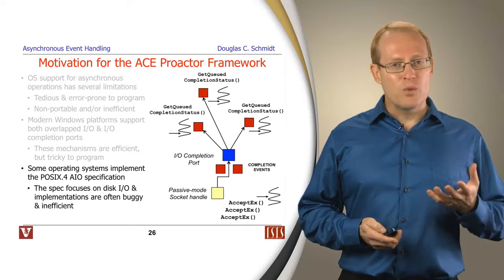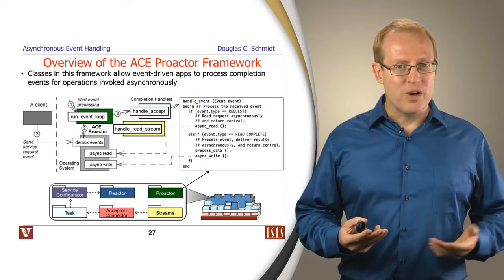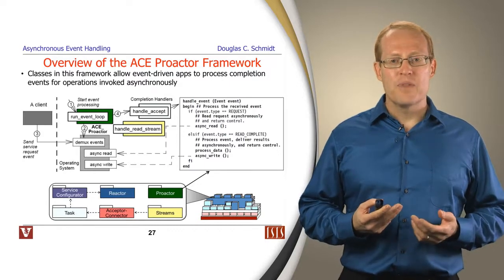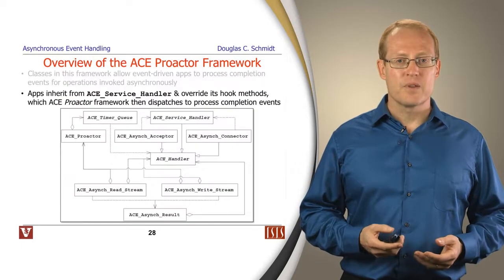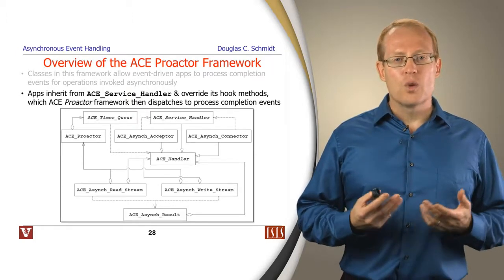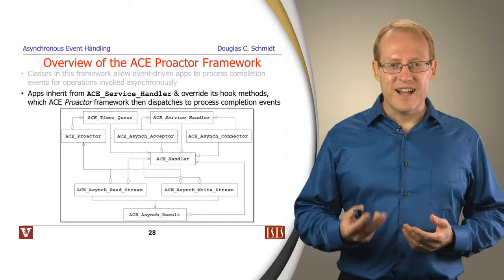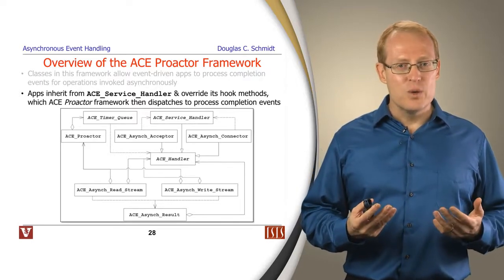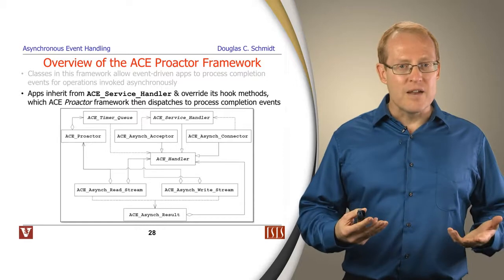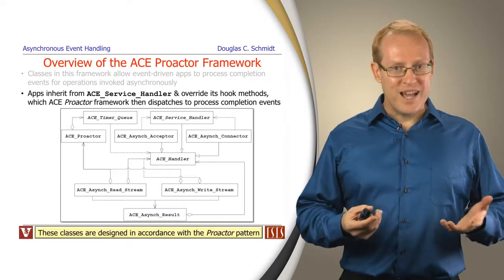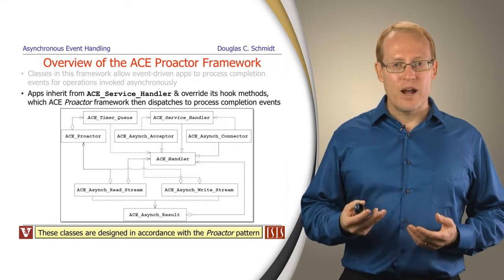Because of all these different issues, we decided to come up with a framework that would help to hide as much of these complexities as we could. This framework is the ACE ProActor framework. The classes in this framework allow event-driven applications to process completion events for operations invoked asynchronously. Typically, classes who use this framework will inherit from ACE Service Handler, and the ProActor framework will dispatch various hook methods when asynchronous operations complete. The various classes are inspired and designed in accordance with the ProActor pattern that we talked about before.